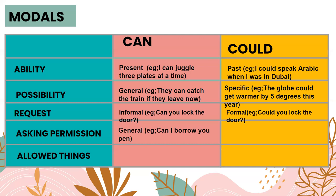When we need to ask permission, we can generally say: Can I borrow your pen? or Can I speak to you? That's a very casual way of asking permission. However, could is more polite and formal. If you're talking to your boss, your teacher, or someone you've met for the first time, could is more recommended — for example: Could you lend me your pen?